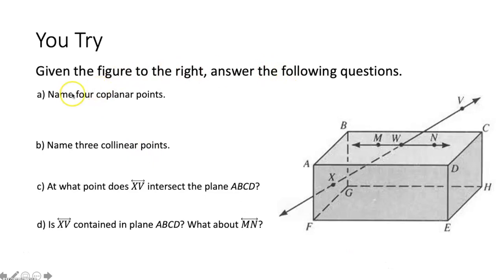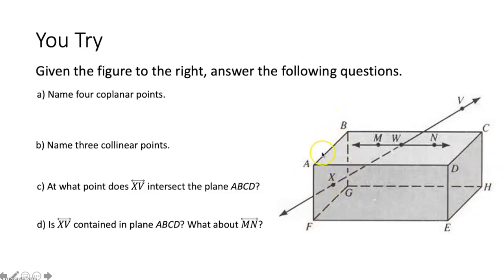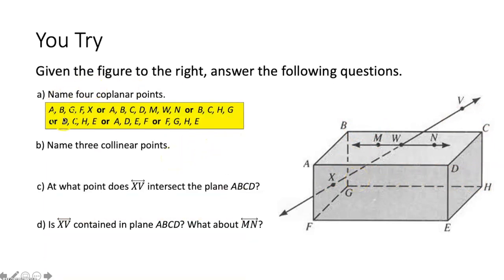Time for a U-trap. Given the figure to the right, name four coplanar points. Coplanar means points that are on the same plane. On the top of the box, points A, B, C, D, M, W, and N would all be coplanar. On the bottom of the box, points F, G, H, and E would all be coplanar. On the right side: D, C, H, and E. On the left side: A, B, G, F, and X. On the back: B, C, H, and G. Any of these answers would be correct.